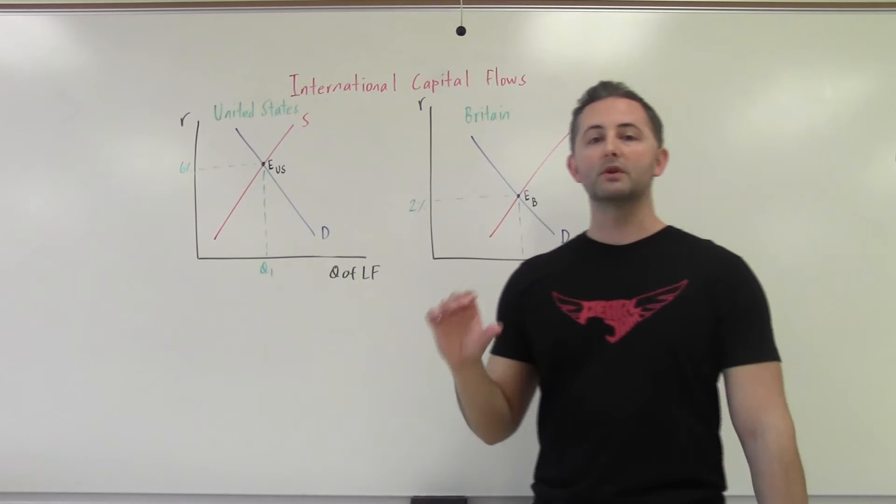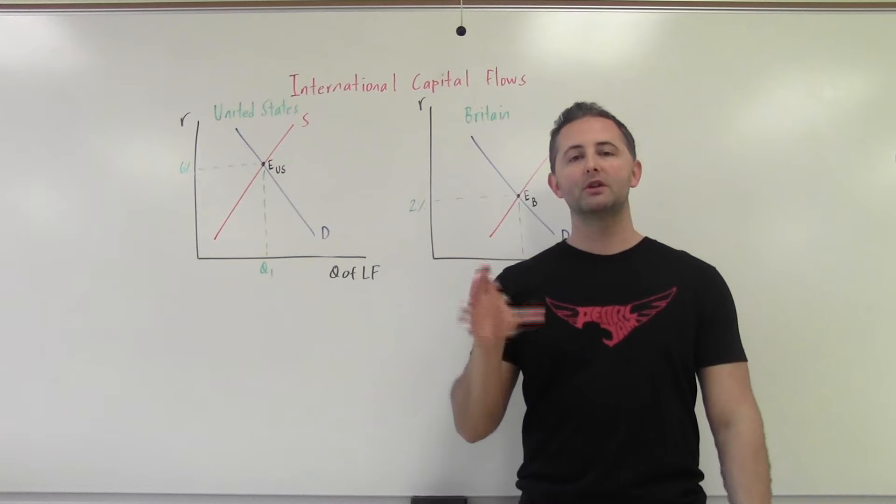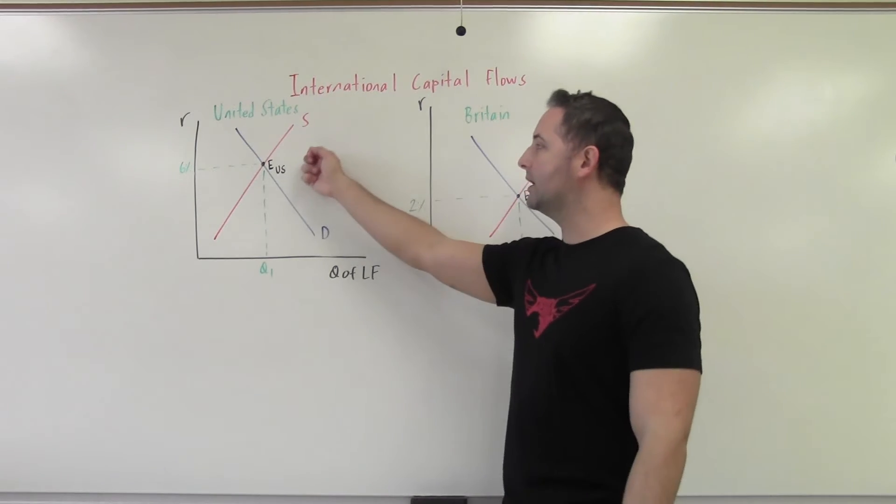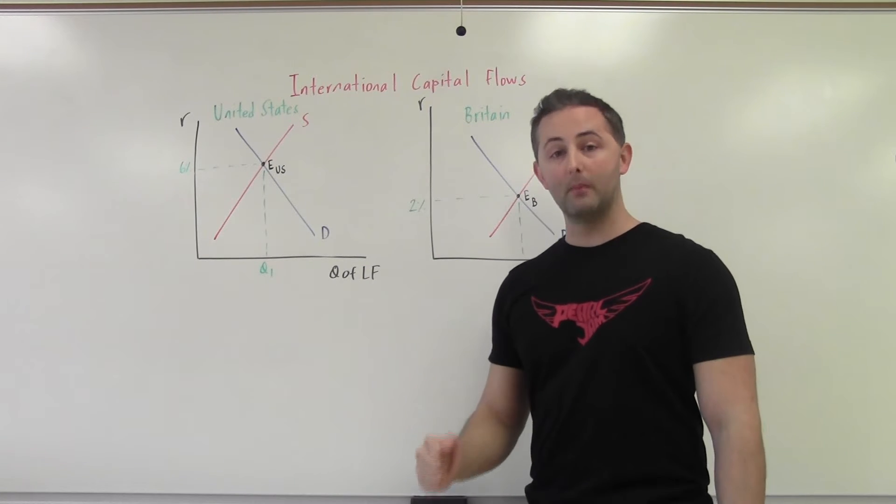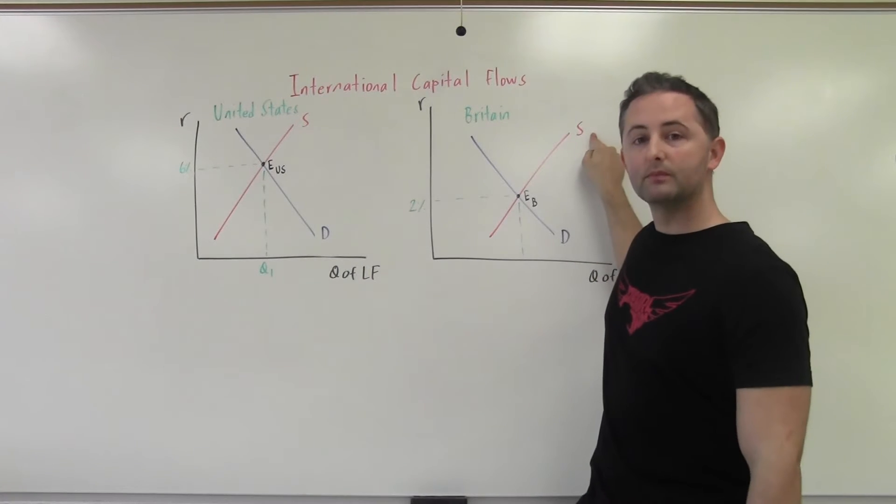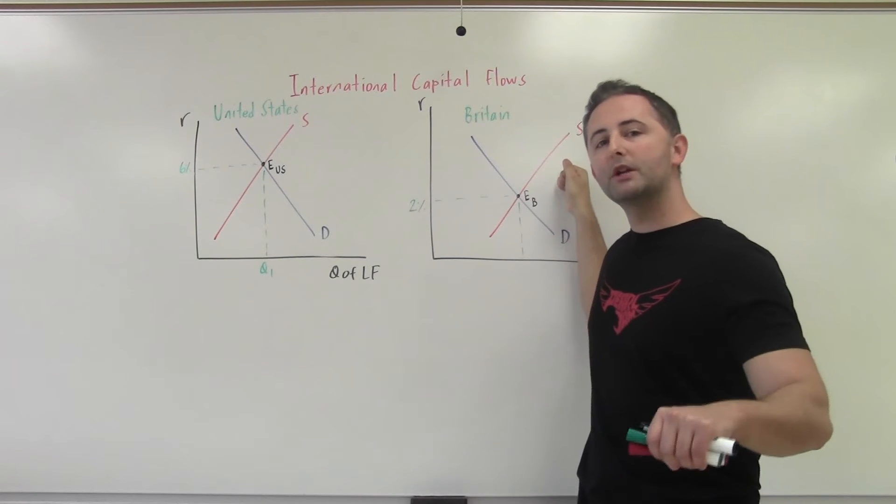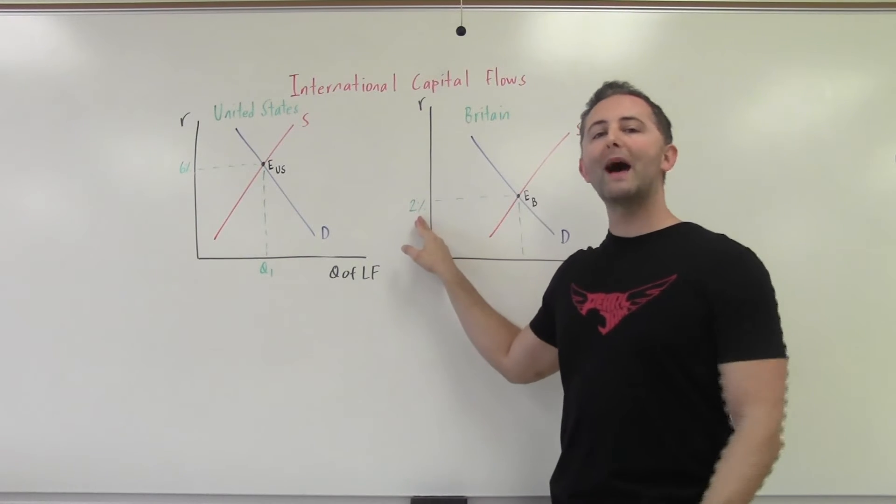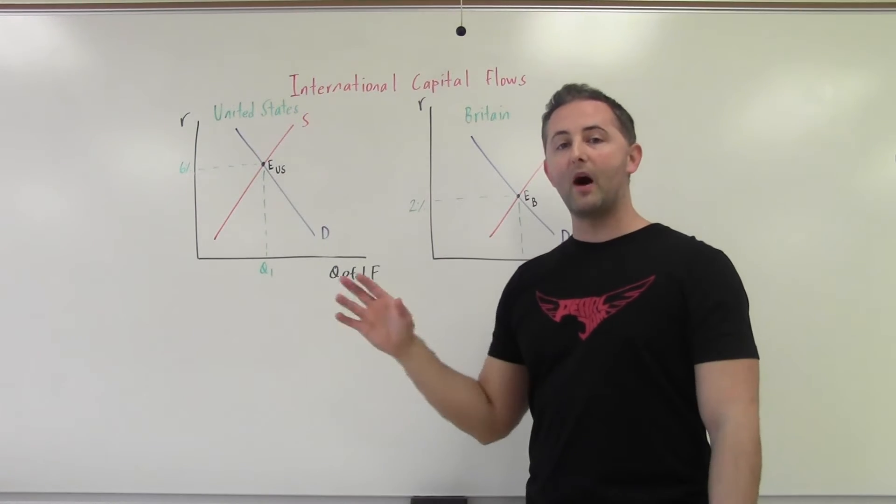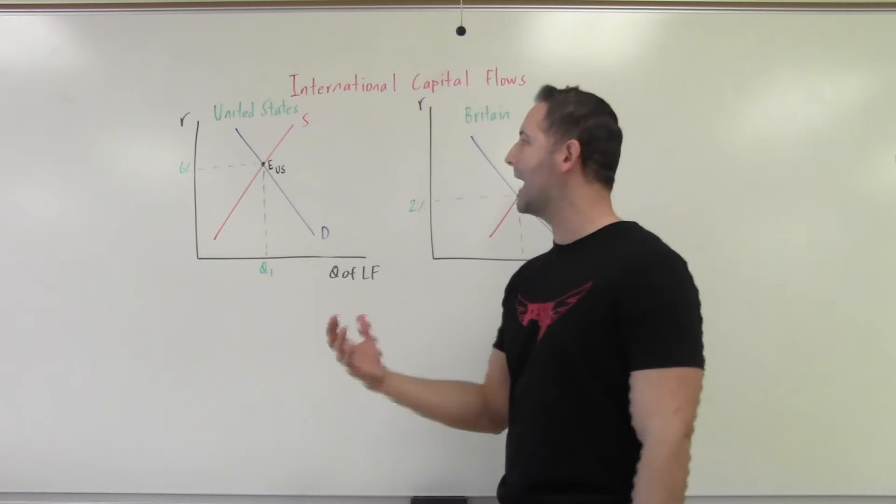Here's the bottom line. Remember, supply of loanable funds is represented by savers, by lenders. What type of interest rate do savers and lenders prefer? They prefer a higher interest rate because they are going to get a bigger return for their money. So British savers are going to send some of their money, instead of having it stay in British banks where it's only earning 2%, they would rather it earn 6%. Money is always going to follow where it can be best allocated, where it can be most profitable, or get the highest rate of return.